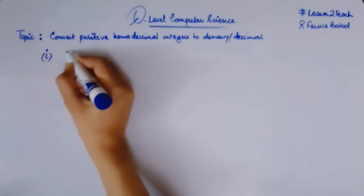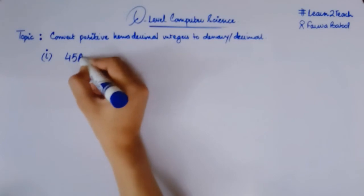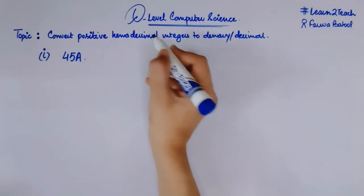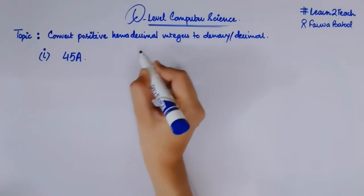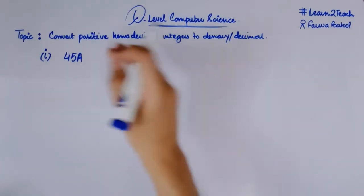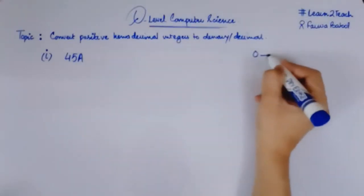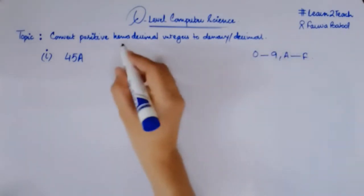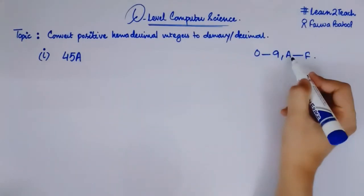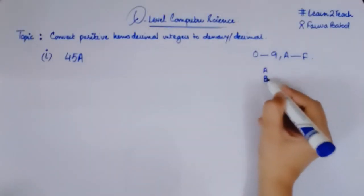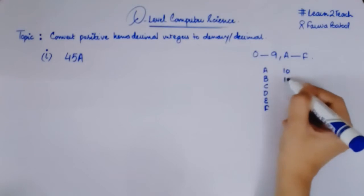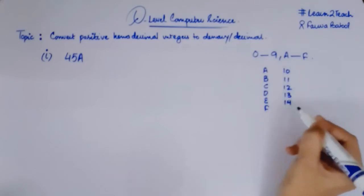Here I have a hexadecimal number that is 45A. I hope you know about hexadecimal numbers — if not, please see my other introduction videos where you can find the definition of hexadecimal number system. For now, any number represented in these 16 digits — from 0 to 9 and from A to F — is known as a hexadecimal number. A to F can be represented as A, B, C, D, E, F, which equal 10, 11, 12, 13, 14, 15.